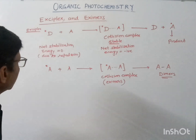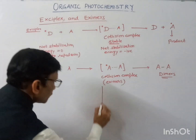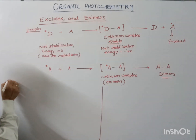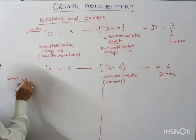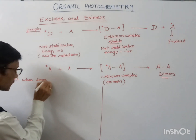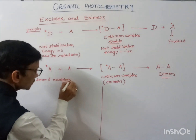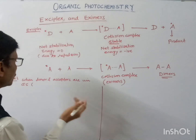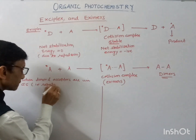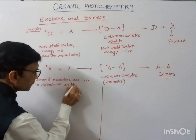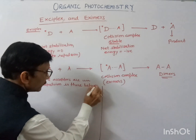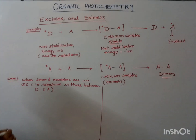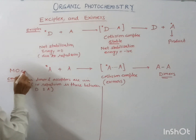Now let us understand this with the help of the molecular orbital concept. In case one, when the donor and acceptor are in the ground state, a repulsion takes place between them. We can understand the exciplex and excimer formation using the molecular orbital concept.